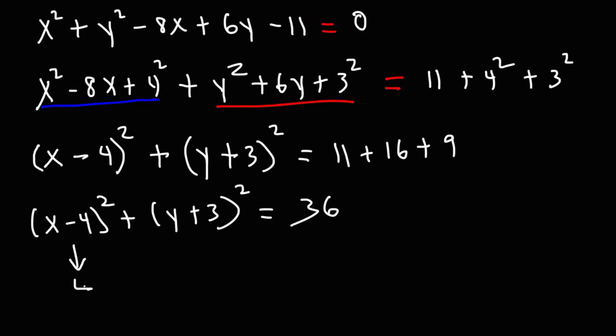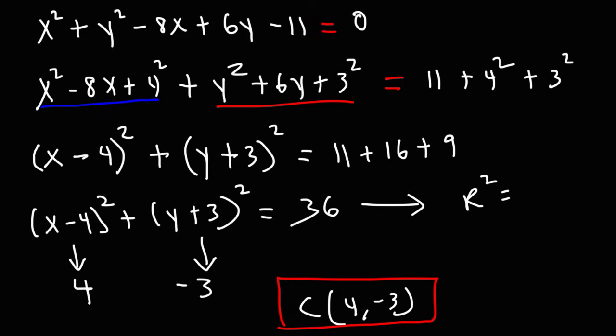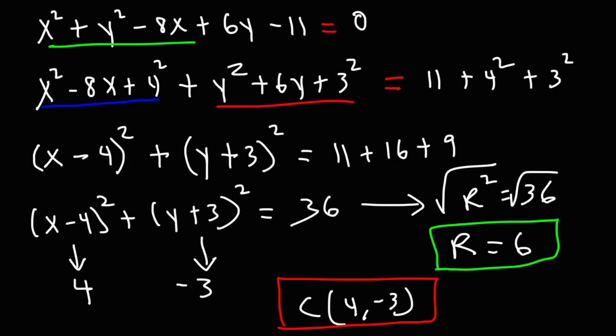So h is positive 4. k is negative 3. So the center is going to be 4, negative 3. Now r² is 36. And the square root of 36 is 6. So that's going to be the radius of the circle. So now you know how to identify the center of the circle and the radius of the circle, given the equation of the circle.